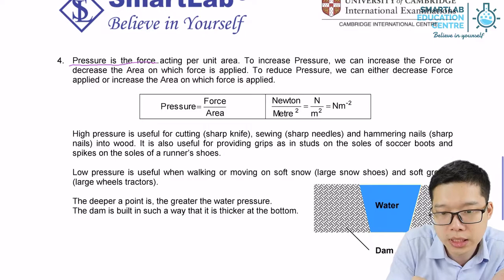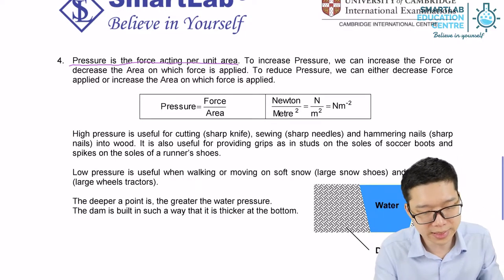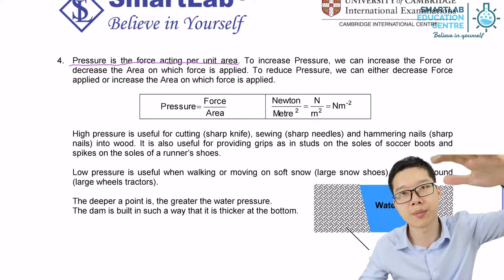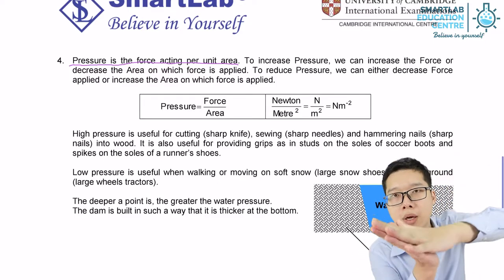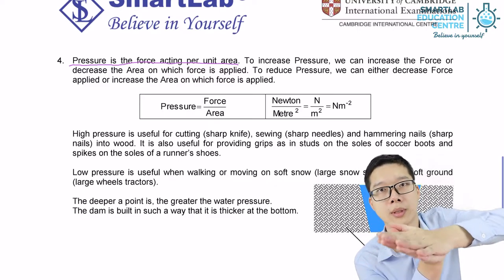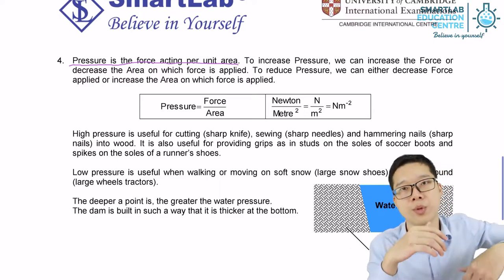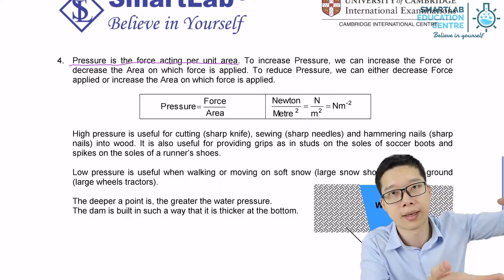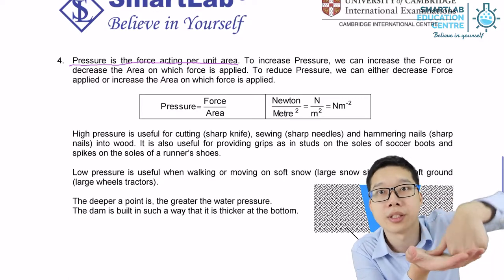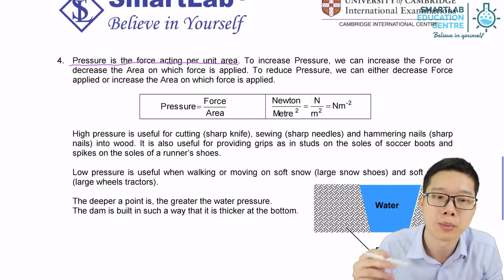Pressure is the force per unit area. It means if I'm applying the same amount of force using my hand, my face, or my palm on the table, nothing will happen. But if I'm using the same amount of force and pressing down the nail, the nail will penetrate the table. So that's the effect of pressure.